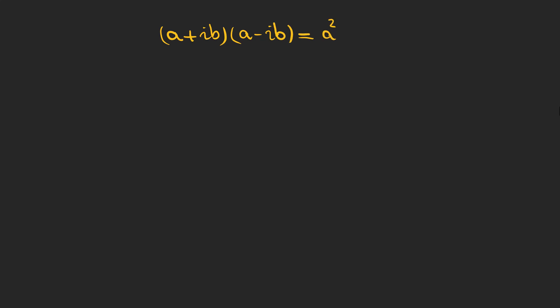Now we want to use this identity to help us with division. Look at this division: we have a complex number in the numerator and another complex number in the denominator. If I ask you to identify the real part and the imaginary part, you cannot easily tell just by looking at it.